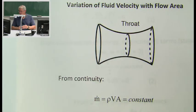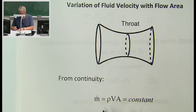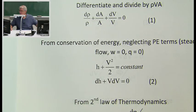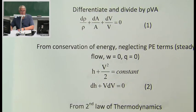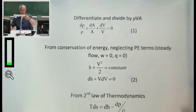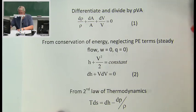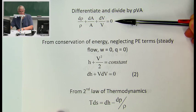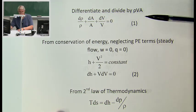We're going to analyze this channel. From the continuity equation for a steady flow, the mass flow rate equals rho times velocity times cross-sectional area, and for steady flow that's constant. I'll differentiate all terms and divide by rho·V·A, giving: dρ/ρ + dA/A + dV/V = 0. We'll call that equation one.